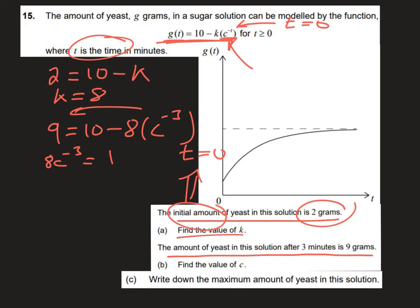c^(-3), remember that's 1/c³. So what we've actually got is 8/c³ = 1. Therefore, 8 = c³, so c is the cube root of 8, which equals 2.